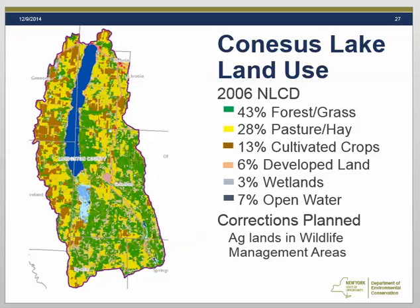The representation of land use is an important part of the watershed model. This map shows the land use in the Canisius Lake watershed, as determined by the 2006 National Land Cover Database. It shows a mix of land uses. The green shades are different types of forest and grass covers, making up about 43% of the watershed. Pasture and hay makes up another 28%, shown in yellow. In brown are the cultivated or row crops, which make up another 13%. Developed land is in the pinks and reds, making up about 6%, showing more developed areas in the villages, along the lakeshore, and along some roads.